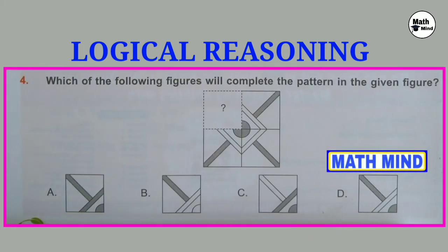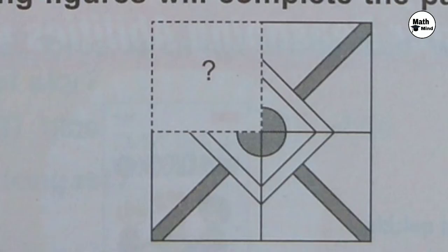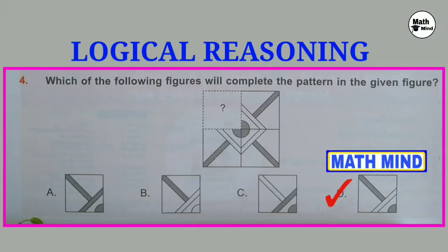Question number 4: Which of the following figures will complete the pattern in the given figure? Looking towards the inside circle, it is colored. So option B is cancelled. This shape is colored and this shape is not colored. Regarding this, option D is correct.